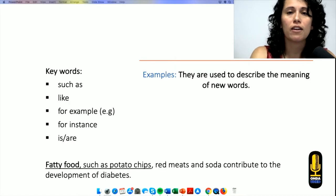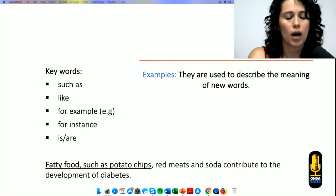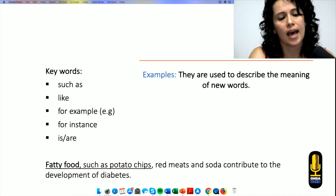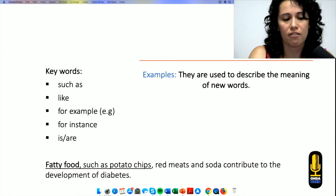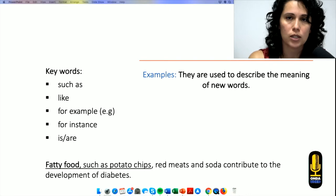And finally, we can find examples in the reading. So, take advantage of them. We might find words such as, for example, in the example, fatty food. We might not know what is that. But as soon as I read fatty food, such as potato chips. Oh, I know what potato chips are. So, I know what's a fatty food. That's why examples are also super important while reading.